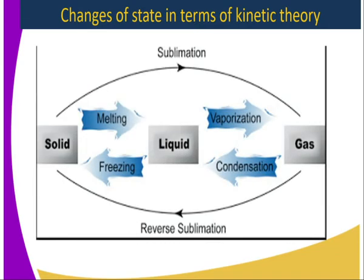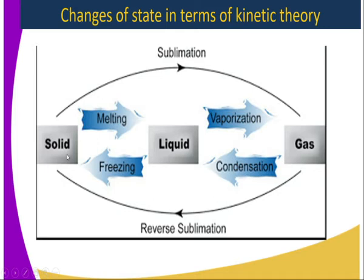What are the changes of state? Solid changes its state to liquid through melting. Liquid changes its state when heated through vaporization or evaporation. When the temperature of a gas is lowered, it changes to liquid through the process of condensation. When the temperature of the liquid is decreased, freezing takes place — the process through which liquid changes its state to solid.